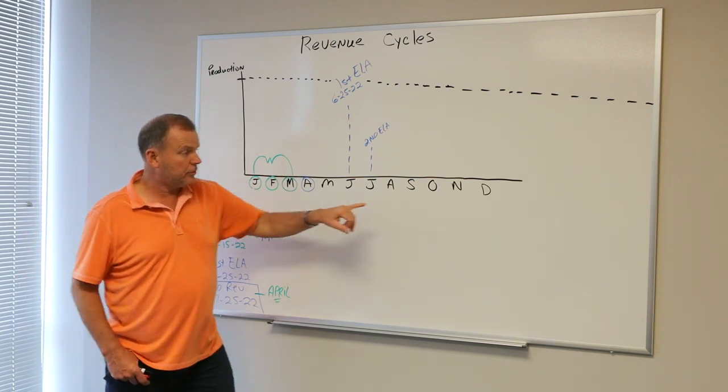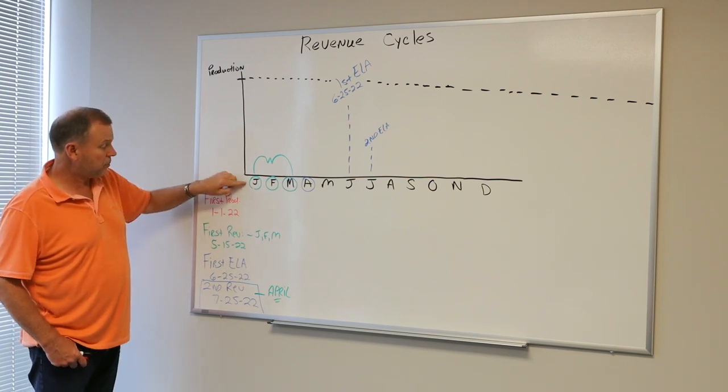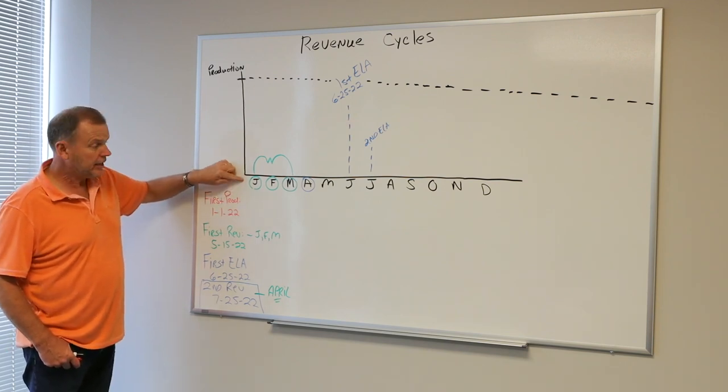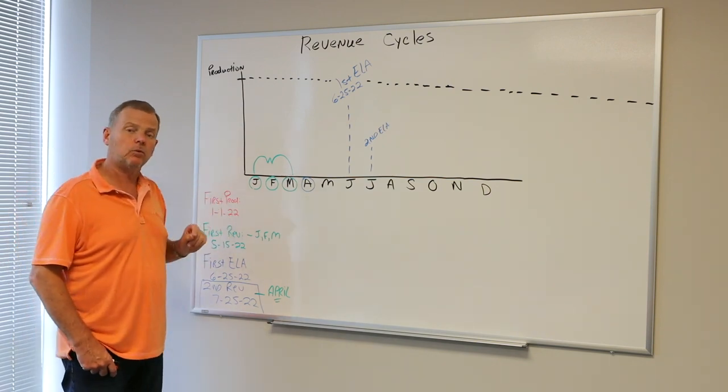In this case, I've given you a January through December calendar. I've given us an effective production date of January 1st, 2022. And I say to myself, how would I explain revenue to my partners? Here's how it works.